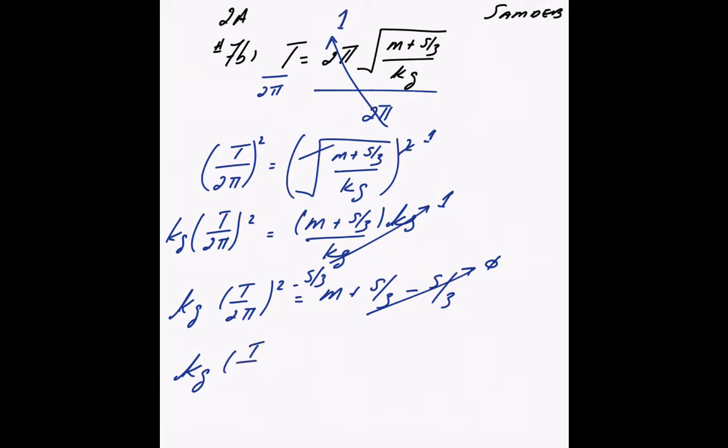kg times t over 2 pi squared minus s over 3 is equal to m.